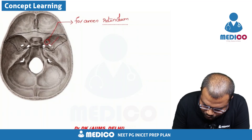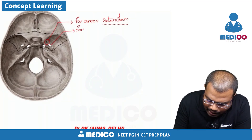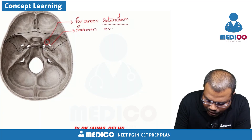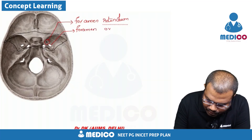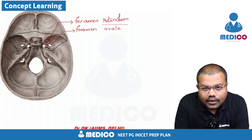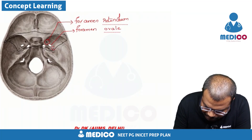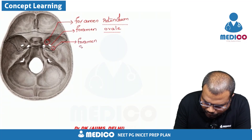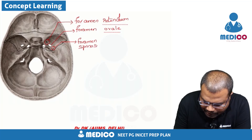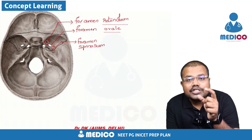Just behind foramen rotundum, you can see an oval-shaped foramen called foramen ovale. Further behind, there is one more small foramen called foramen spinosum. So these three foramina — rotundum, ovale, and spinosum — are present in the base of the skull within the sphenoid bone.